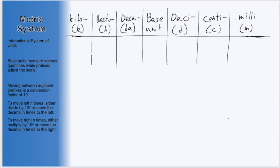Another strength of the metric system is how straightforward moving between prefixes is. Take a look at this table. In the center, we have our base unit,